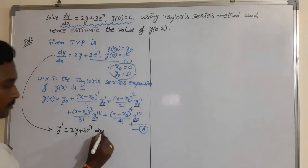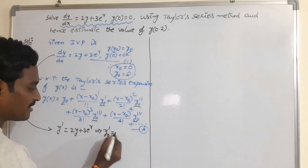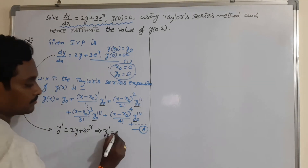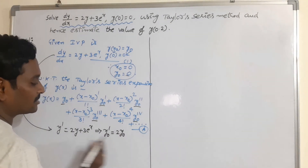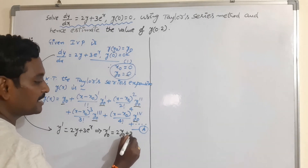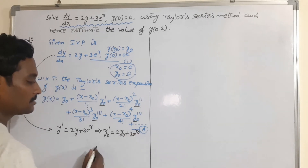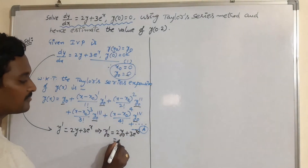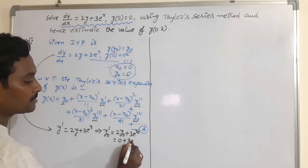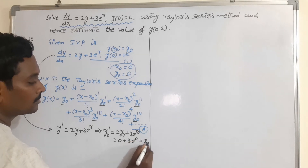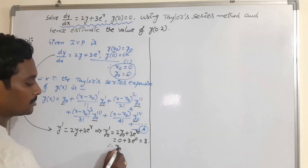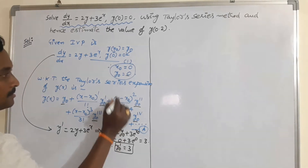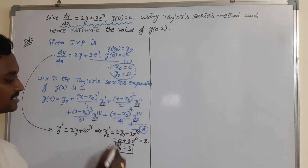From this, what is y₀'? Whenever we have a variable, just write 0 in the suffix. So y₀' = 2y₀ + 3e^(x₀). What is y₀? It is 0. So 2 times 0 is 0, plus 3 times e^0. Therefore y₀' = 3.